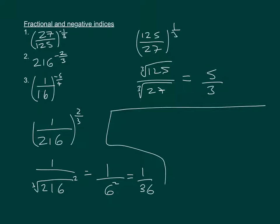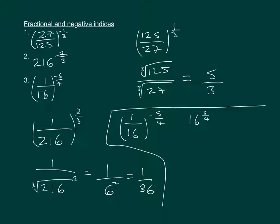And then the final question: we've got 1 over 16 to the power of minus 5 over 4. That minus is telling us to do the reciprocal, so we get 16 to the power of 5 over 4. We're going to take the fourth root of 16 to the power of 5. The fourth root of 16 is 2, to the power of 5, which gives us 32.